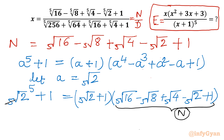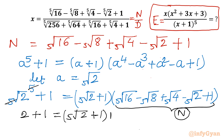So I will cancel the 5th root and power 5. On the left-hand side it is 2 + 1. On the right-hand side it is (5th root of 2 + 1) times numerator. So from here I can write our numerator value: 2 + 1 is 3, so n equals 3 over (5th root of 2 + 1).